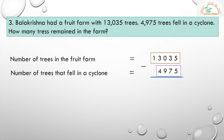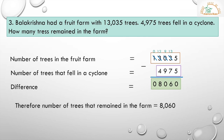Do the subtraction. Regroup the places. 5 minus 5 is 0. 13 minus 7 is 6. 9 minus 9 is 0. 12 minus 4 is 8. And 0. This is the difference we got. Therefore, the number of trees that remain in the farm is equal to 8,060.